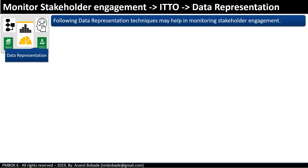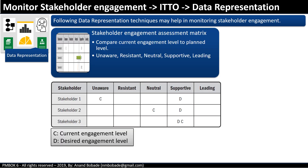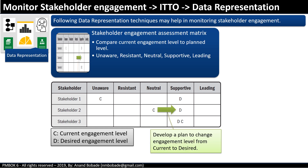Under data representation techniques, the stakeholder engagement assessment matrix is used to chart the progress in bringing the current level of stakeholder engagement to the desired level. The project manager will develop a plan to change engagement from the current to the desired level.